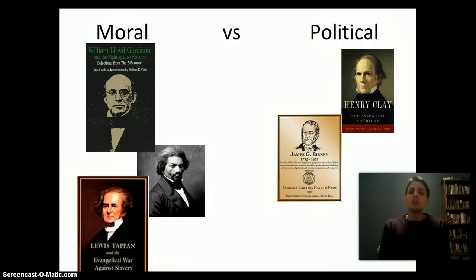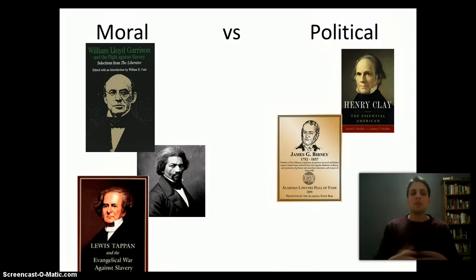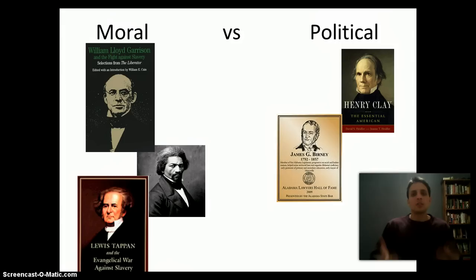On the flip side, you have political anti-slavery, which appeals to a very different perspective. You have Henry Clay and the American Colonization Society - him and James Madison are going to form this society. Their whole take is that slavery is going to destroy the Union, so it's a very political standpoint. It's not that they're morally opposed to it; it's that slavery is going to tear the country apart. They're not really morally inclined to help Black people in America - they really want to just send them back to Africa. That's their whole idea.